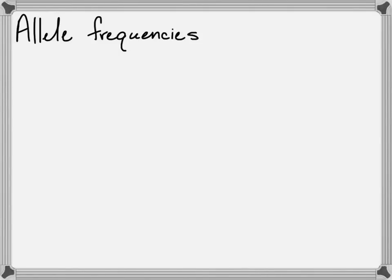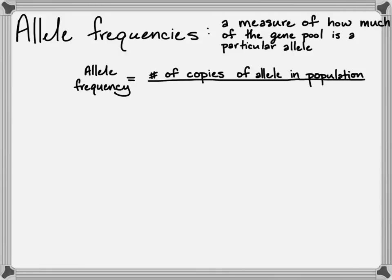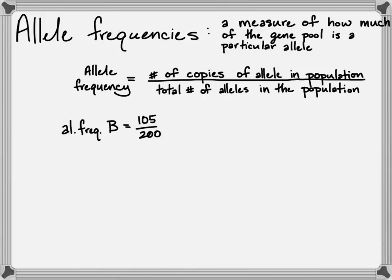We're going to start this lesson with a term from the last lesson: allele frequencies. They're a measure of how much the gene pool contains a particular allele or form of a gene. You can calculate an allele frequency by taking the number of copies of a specific allele in the population and dividing it by the total number of alleles. From the last example, that would be 105 out of 200 for the dominant B allele and 95 out of 200 for the recessive B allele.